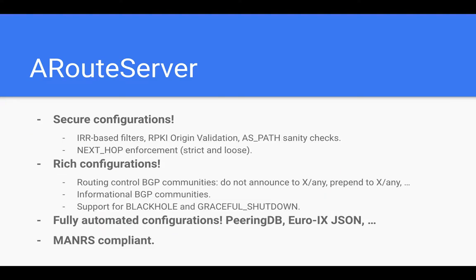These are secure configurations based on industry best practices for internet routing security — IRR-based filtering, RPKI origin validation, AS path sanity checks, next-hop enforcement, min and max prefix length checks, and bogons filtering. Not only secure, but also rich configurations with lots of BGP communities available for internet exchange members to control announcement propagation, implement blackholing services, or graceful shutdown.